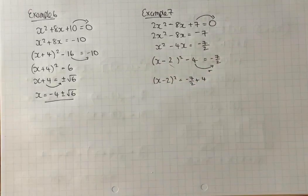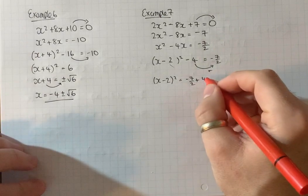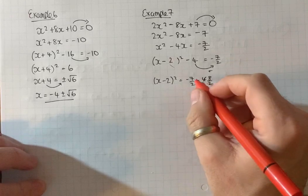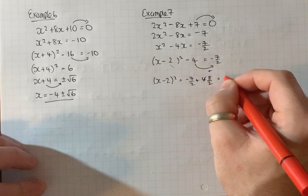Now to add those together, what I'm going to need to do is turn this into a fraction where the denominator is 2. So that's 8 over 2. Minus 7 halves plus 8 halves is 1 half.